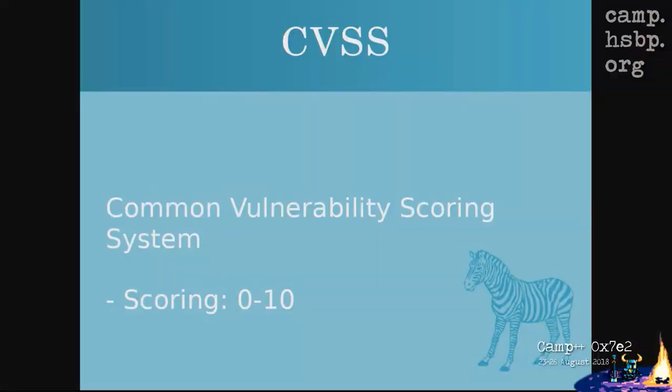The next thing is CVSS — the Common Vulnerability Scoring System. There's a scoring from zero to ten: zero means nothing really harmful, and ten means shut the system down and patch it or throw it away. It's based on formulas depending on different metrics and it's a free and open industry standard.